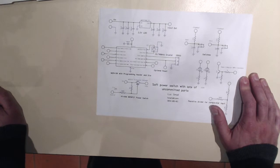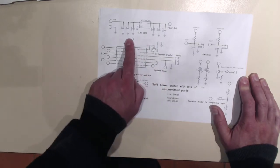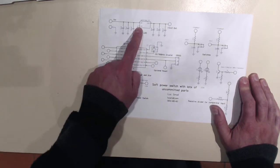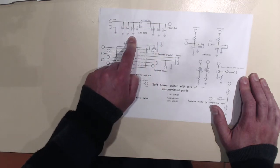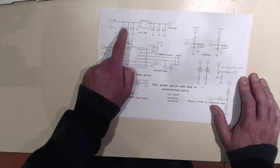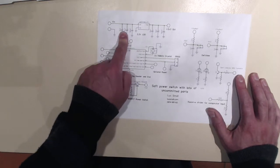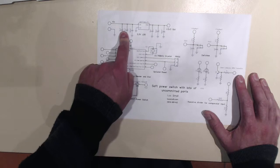So there's that 3.3 volt low dropout regulator. I've made provision for quite a lot of decoupling capacitors here. Always good to have spare spots for decoupling capacitors even if you find you don't need to populate them all.